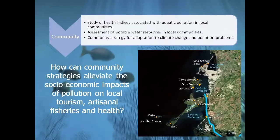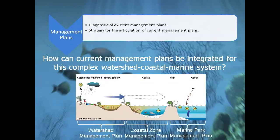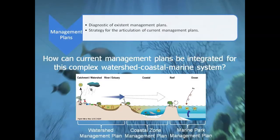This will be supported by public health studies and an assessment of drinking water in the local communities. Another strategy for solving such problems is at the political level through the use of management plans. However, management of this complex system is divided among different administrations which manage the watershed, the coastal zone and the marine parks separately. This project seeks to find strategies to align these plans towards the integrated management of the continental basin, the sea and the coastal communities.